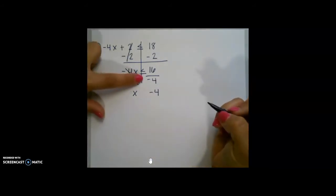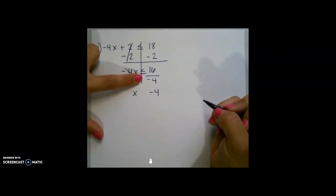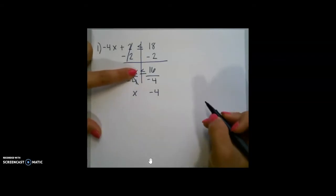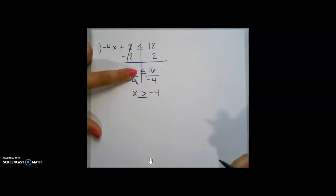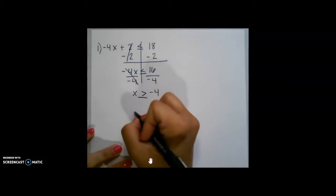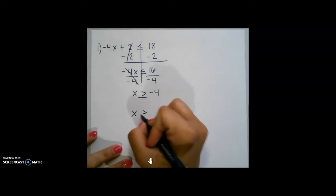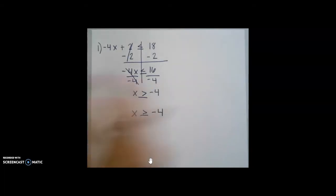Anytime you multiply or divide by a negative number, you have to flip your sign around. So this goes from less than or equal to to greater than or equal to. Let's look at why that is. If I end up with x is greater than or equal to negative 4.